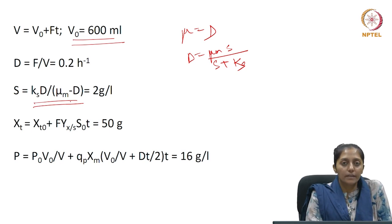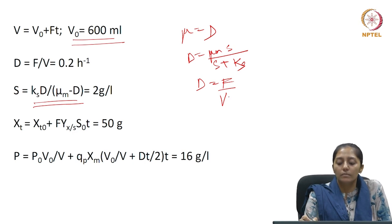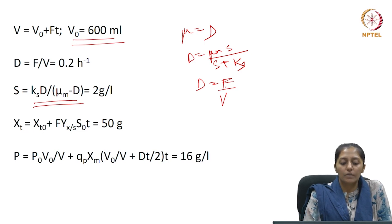So, how to find the dilution rate? The dilution rate is F by V. So, volume at t equals 2 hours is 1000 ml, F is 200. So, then we can find the dilution rate at 2 hours.